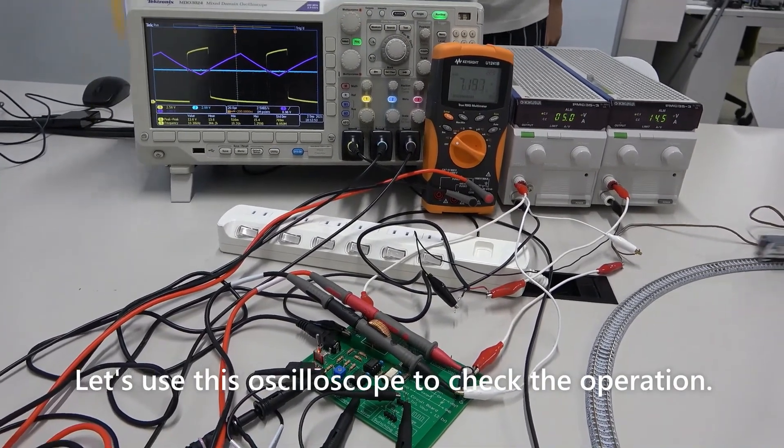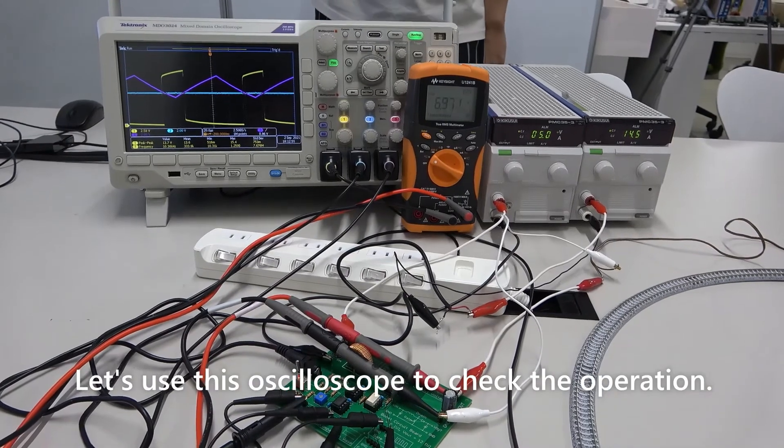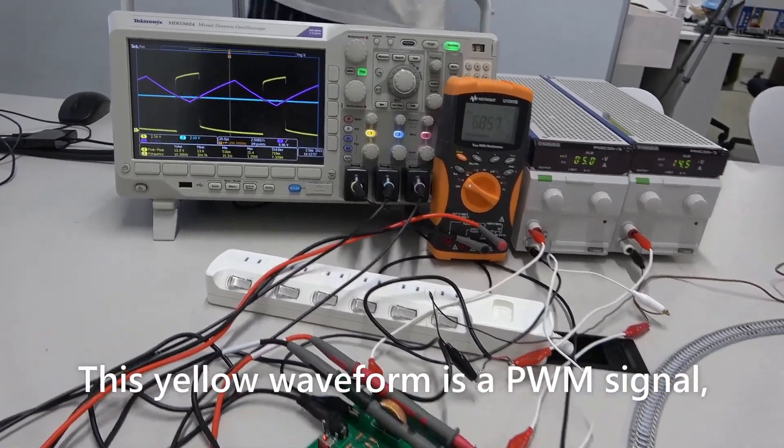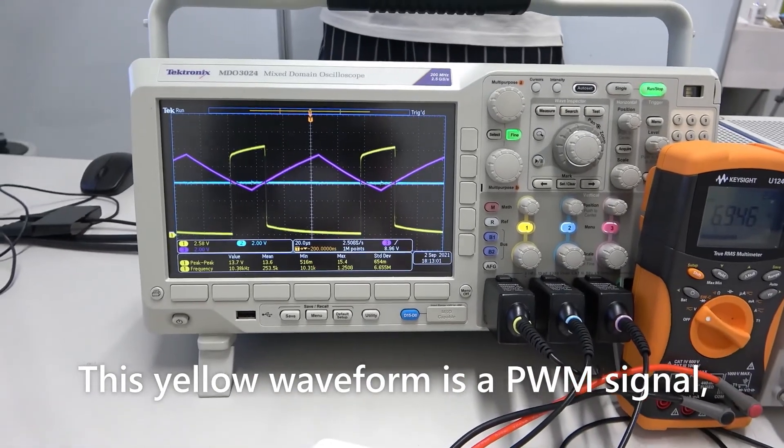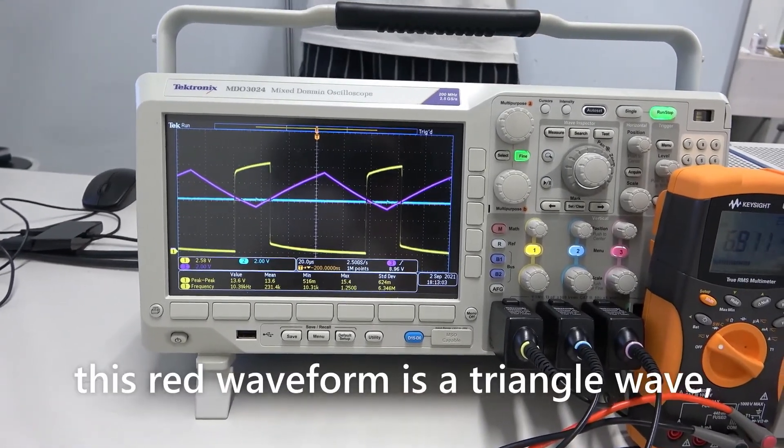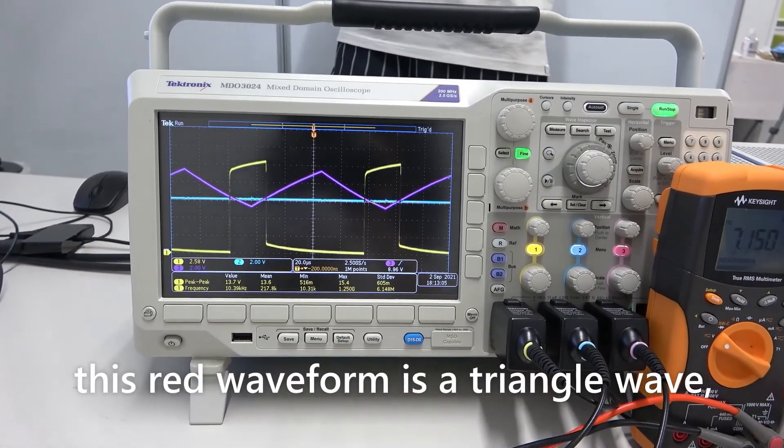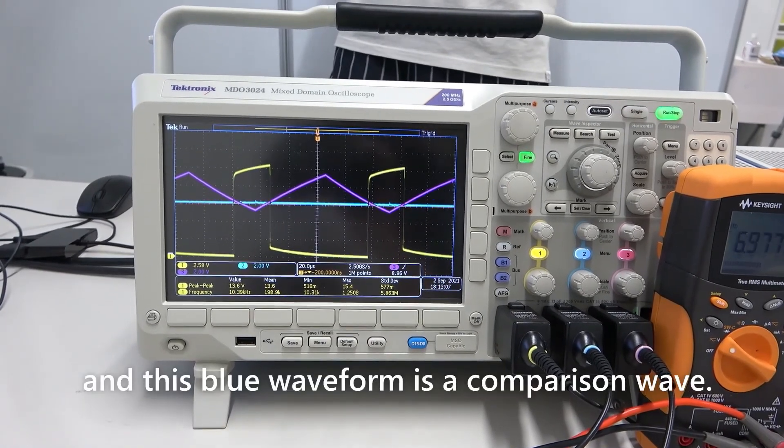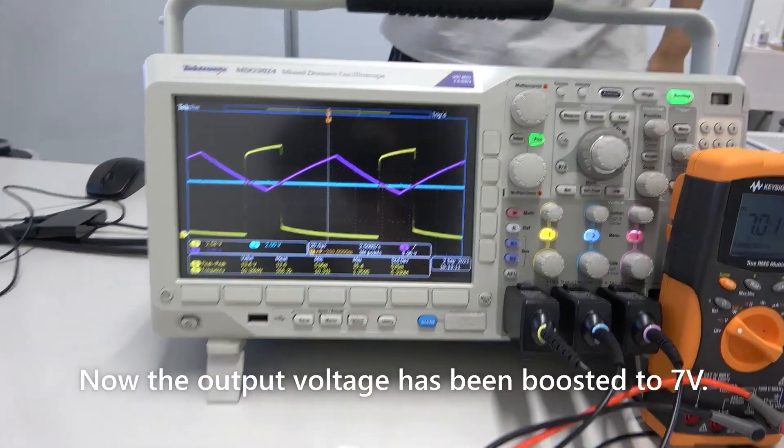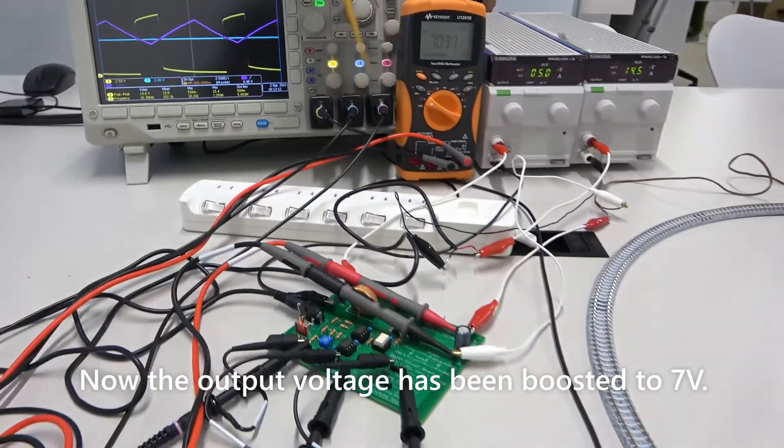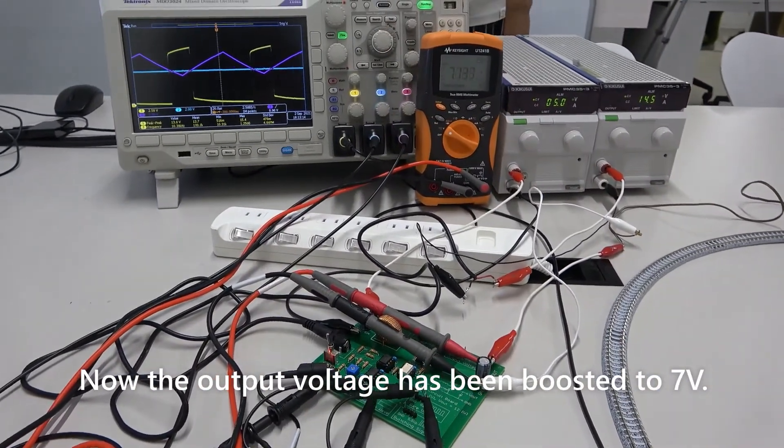This multimeter measures the output voltage. Let's use the oscilloscope to check the operation. This yellow waveform is a PWM signal. This red waveform is a triangle wave. And this blue waveform is a comparison wave. Now, the output voltage has been boosted to 7V.